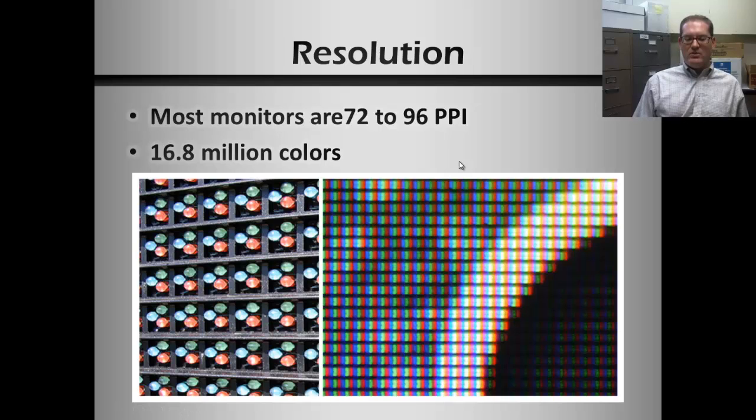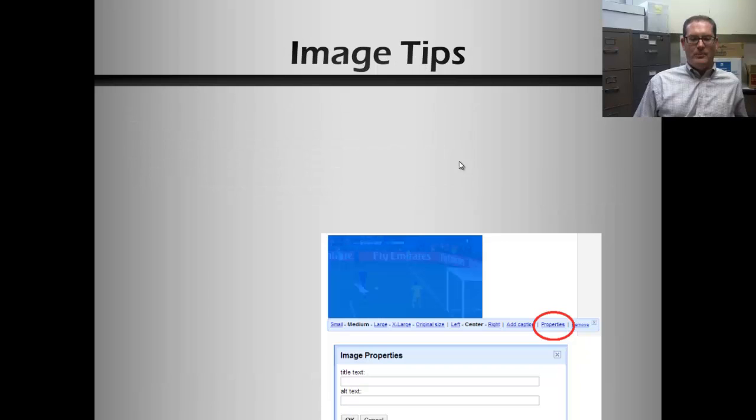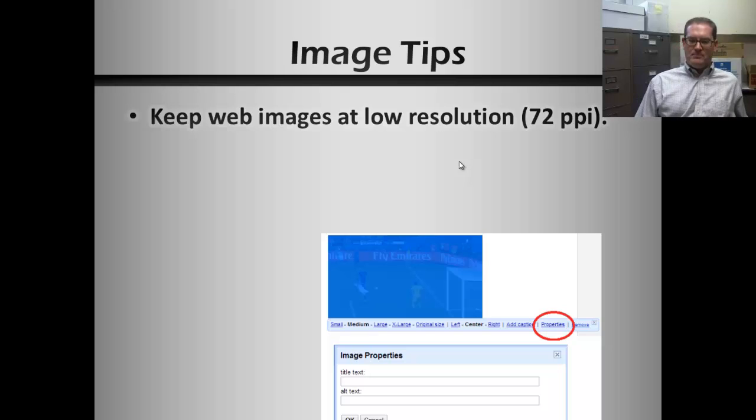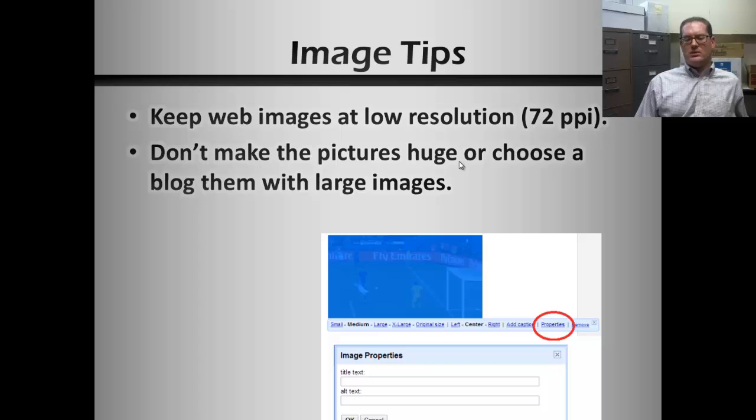So, each of those pixels have different combinations of colors simply by varying those red, green, and blue dots within them. So let's look at some tips for images on your blog. Keep them at low resolution — 72. Don't make them huge. Try to stick with maybe 500 pixels wide at 72 pixels per inch at the most. That's a pretty reasonable size for a blog post.